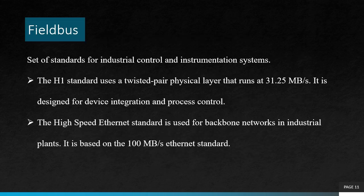Next is FieldBus. FieldBus is a set of standards for industrial control and instrumentation systems. As an example, the H1 standard uses a twisted pair physical layer that runs at 31.25 Mbps and is designed for device integration and process control. The High-speed Ethernet standard is used for backbone networks in industrial plants and is based on the 100 Mbps Ethernet standard.